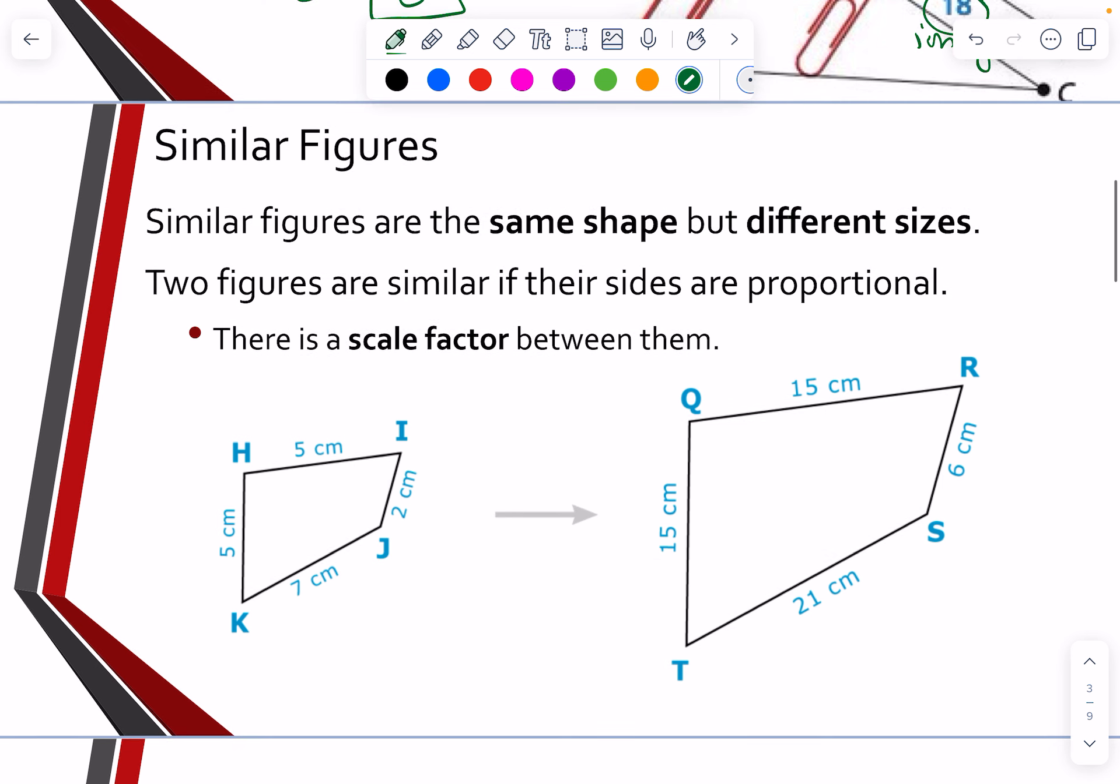Now, similar figures simply say that similar figures are the same shape, but different sizes. The two figures are similar if their sides are proportional. Now, if you remember what a proportion is, a proportion is where we set two ratios equal to each other, and we can find missing sides by cross-multiply.